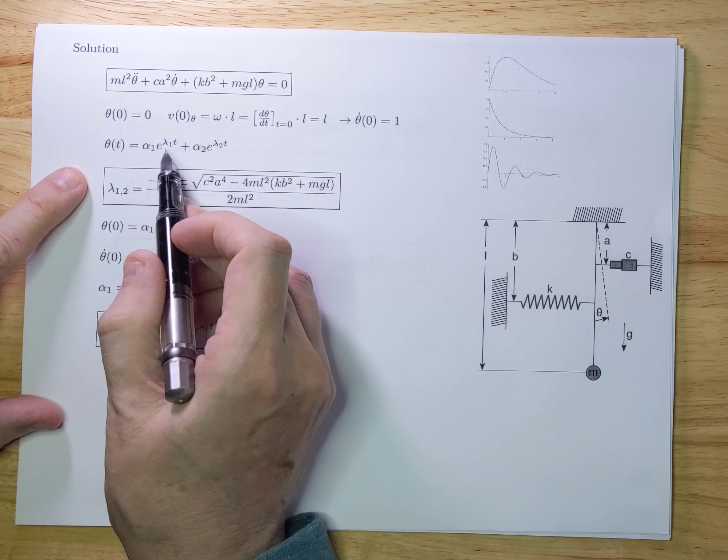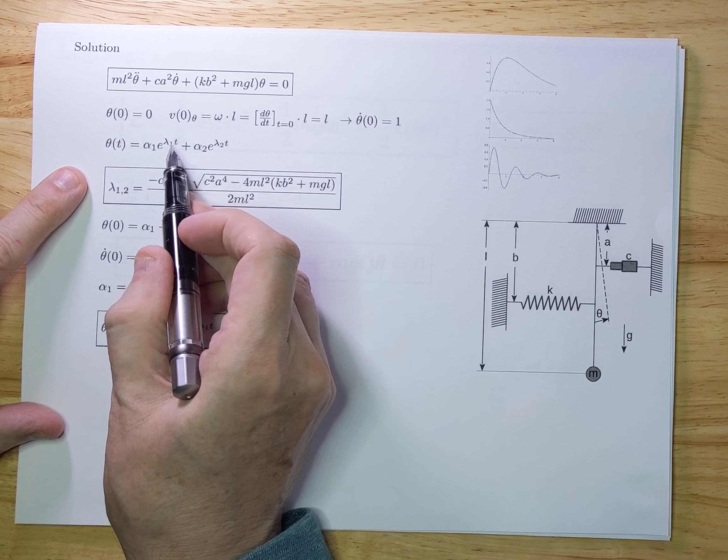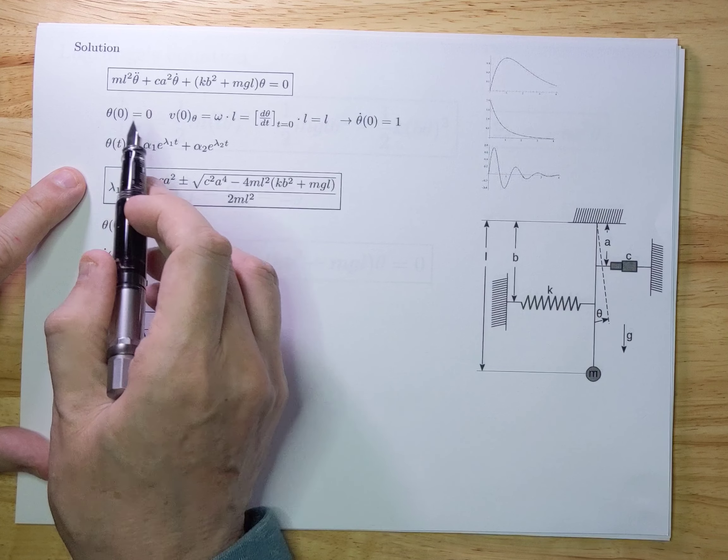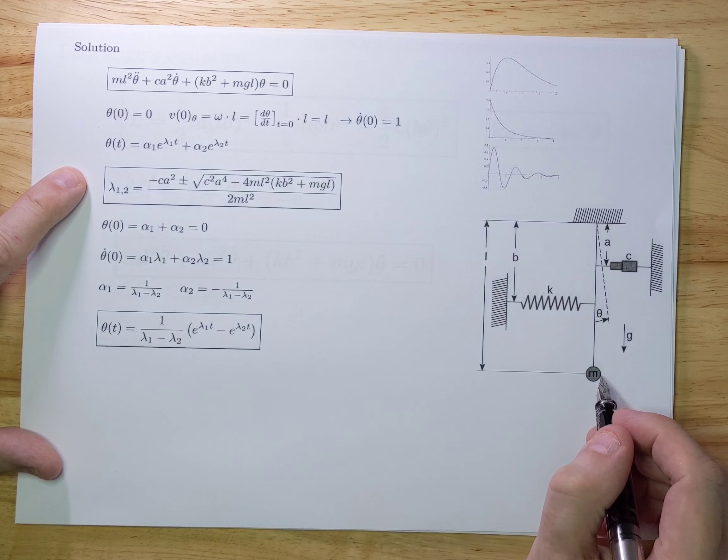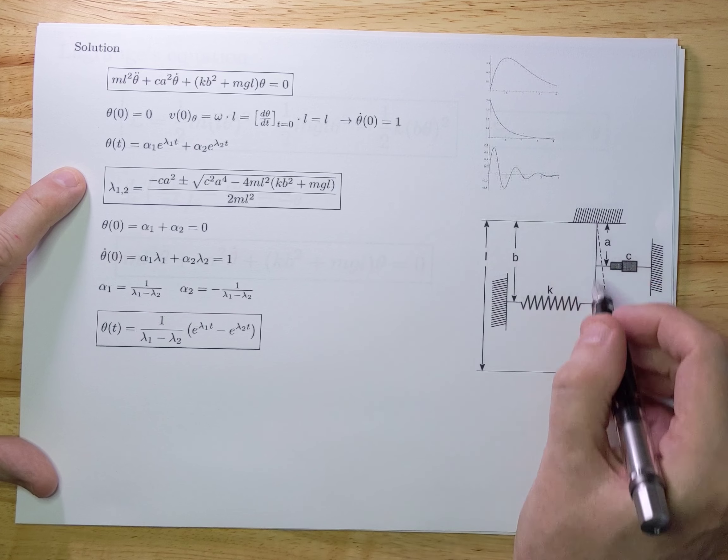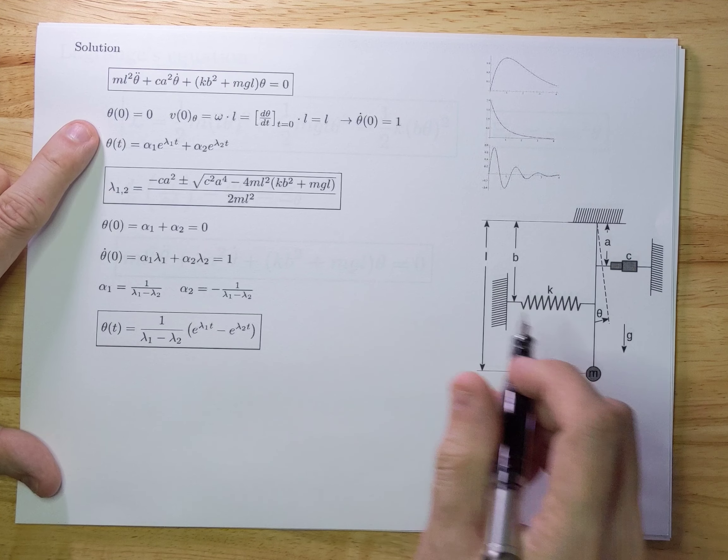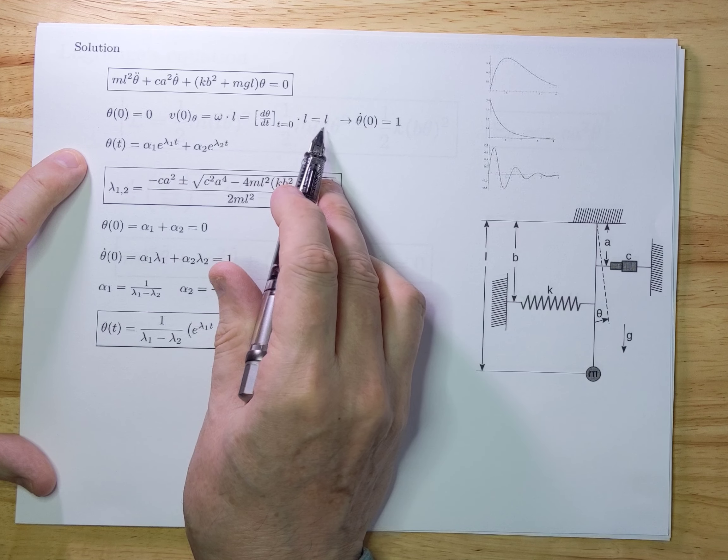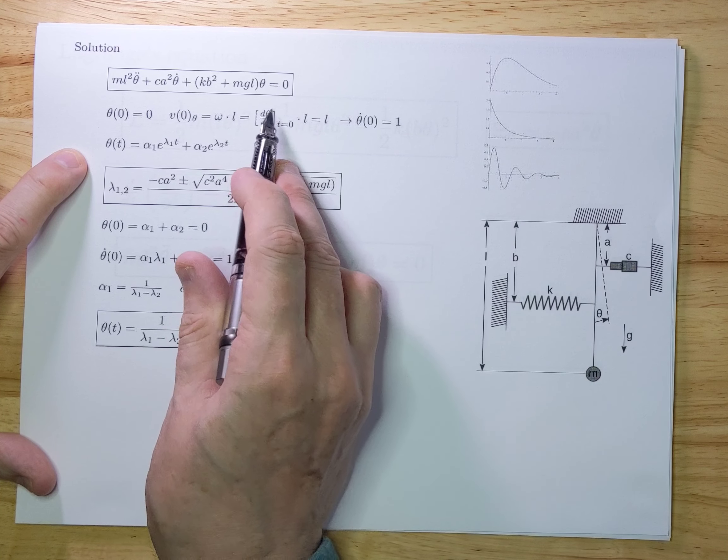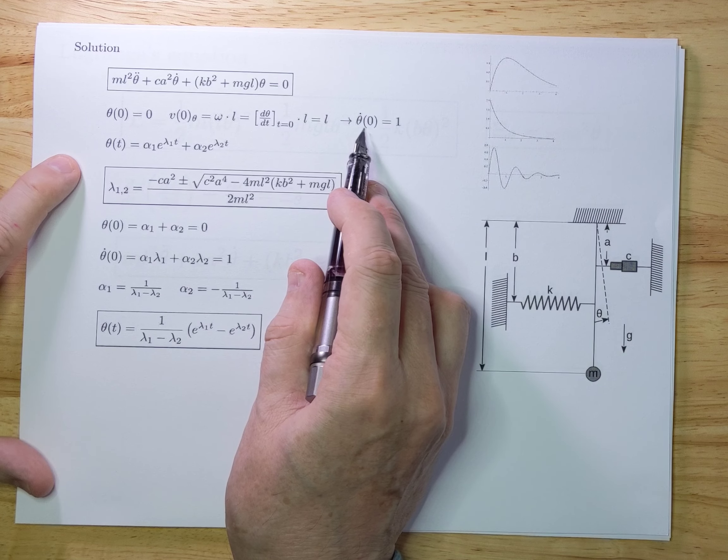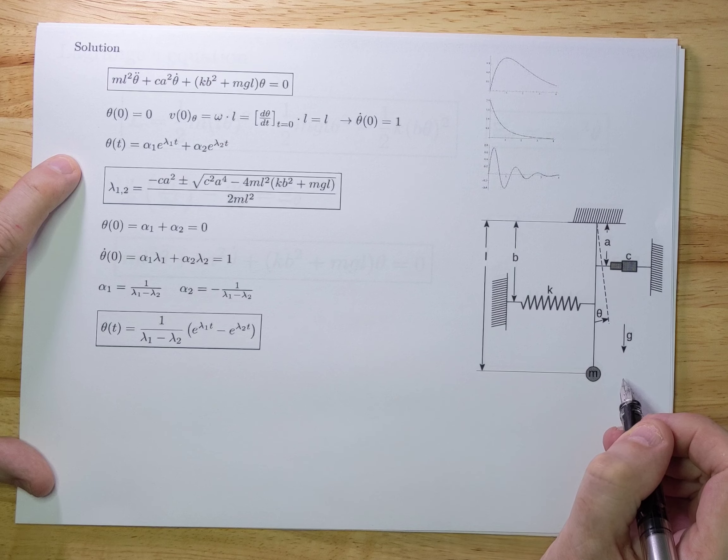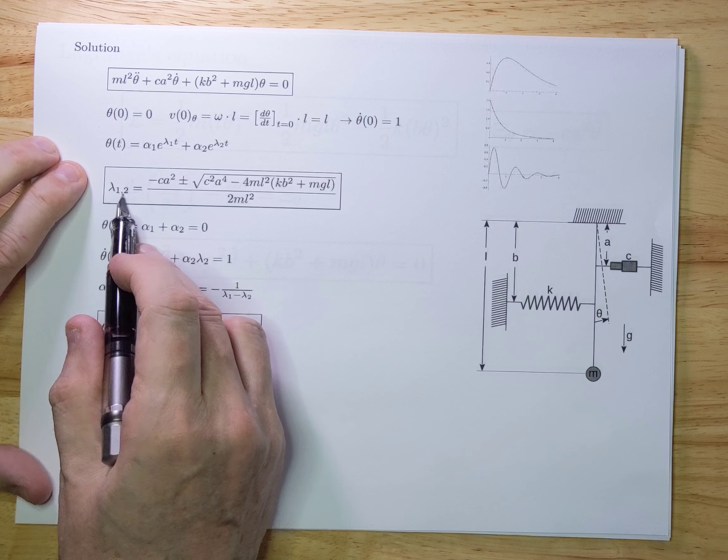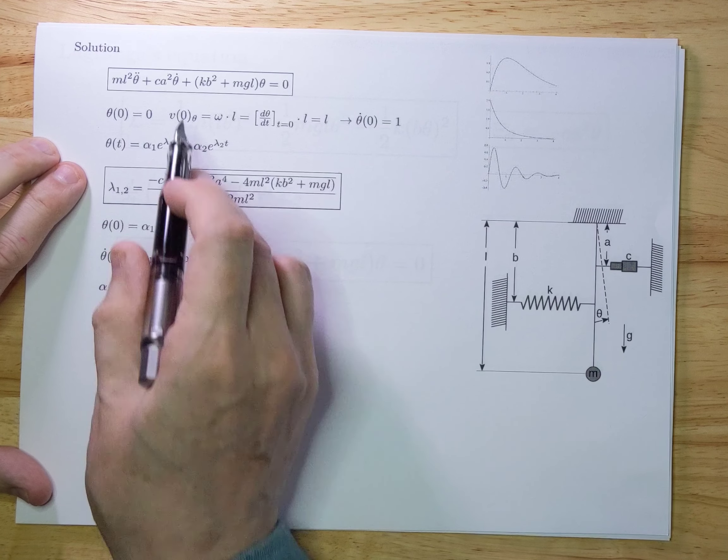It has a generic solution. It has two exponents in there. α1 e to the power λ1 t plus α2 e to the power λ2 t. If you want to solve this in a more specific way, we have two initial conditions that I assigned to it. So at theta equals zero, at time t equals zero, I assume that the pendulum is in this position exactly. There's no angle here. And I also assume that the speed, the angular speed here equals one. So it has a certain speed here. V zero, that speed is L. And V zero is omega L, is dθ/dt times L. So dθ/dt becomes one, at t equals zero. So it has a certain speed in that direction. And it has a location like so. Now you can calculate λ1 and λ2 of this generic solution. And that's just the ABC formula. And that gives you these values based on this equation here.